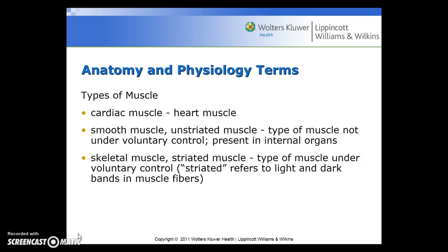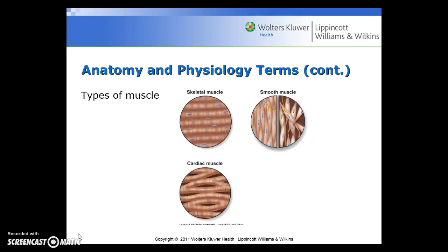Types of muscles are the cardiac muscle, or heart muscle. Smooth muscle, or unstriated muscle, is a type of muscle not under voluntary control but present in internal organs. Skeletal muscle, or striated muscle, refers to the muscle under voluntary control. Striated refers to the light and dark bands in muscle fibers. Here you can see the different types of muscles: the skeletal muscle, the smooth muscle, and the cardiac muscle.